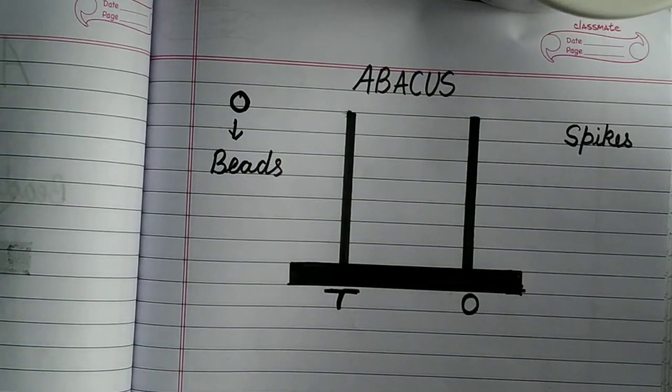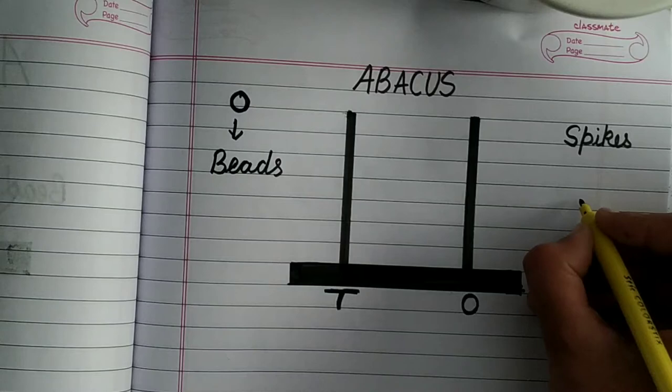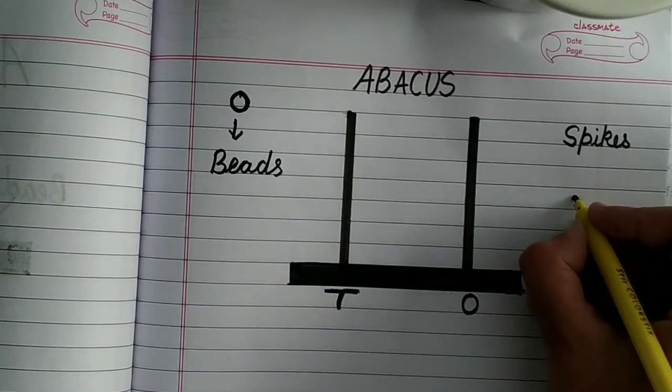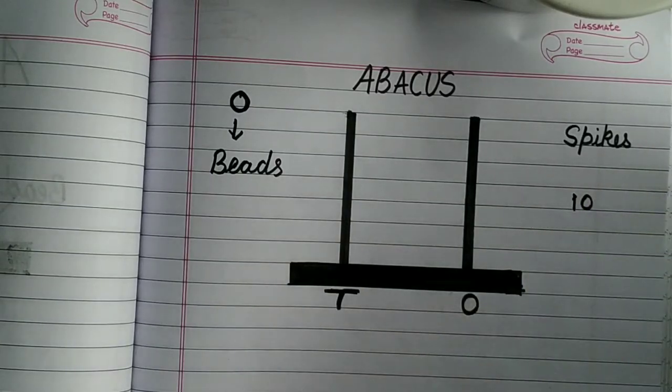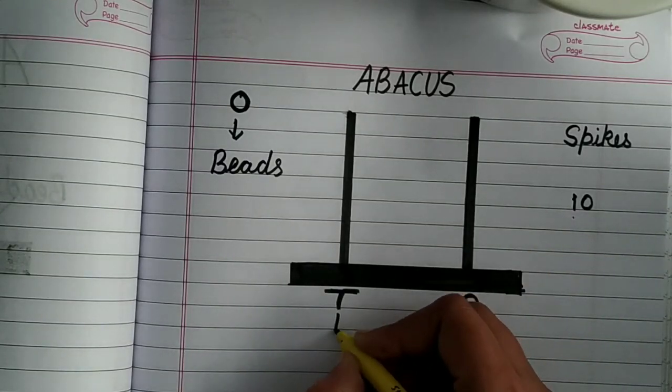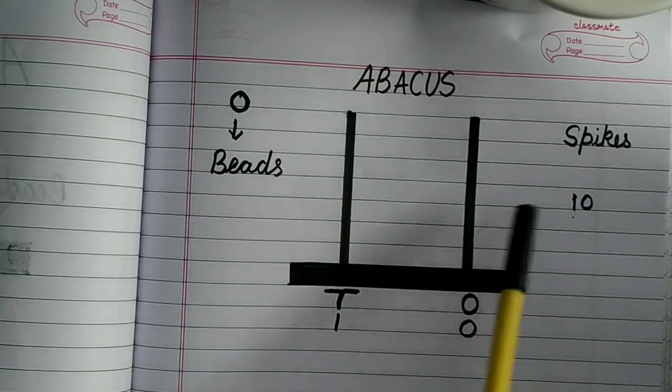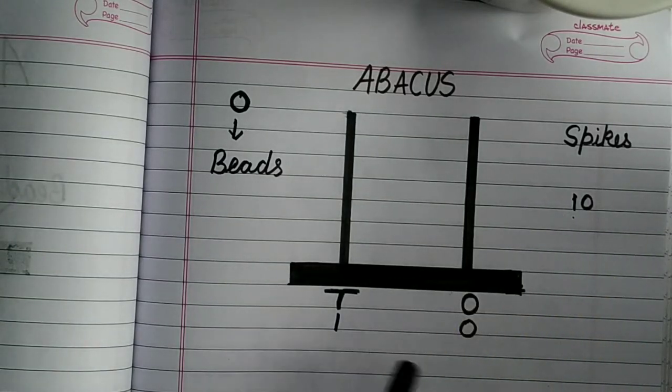So now if I want to write ten. So how will I write ten? So first of all, I have to write ten here. Like this and this. Fine. One will be written under tens place and zero will be written under ones place.